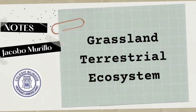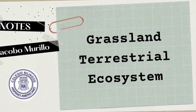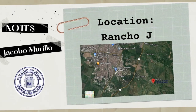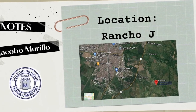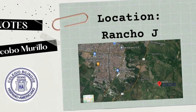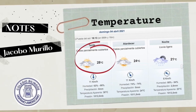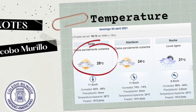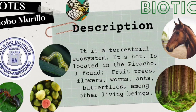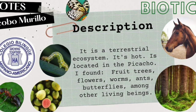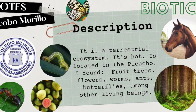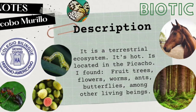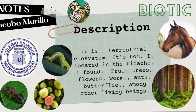Grassland Terrestrial Ecosystem. Location: Rancho J. Temperature: 28 degrees Celsius. It is a terrestrial ecosystem. It is hot. It is located in the Picacho.